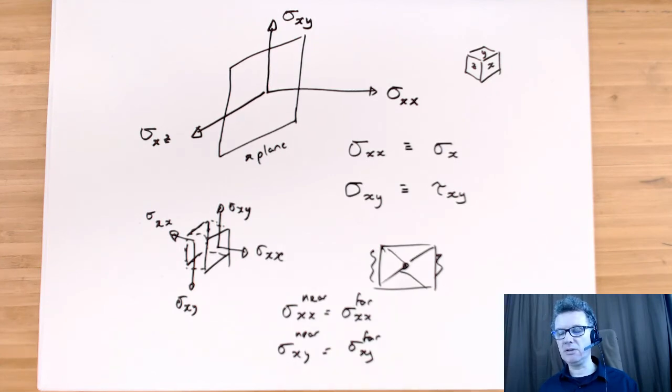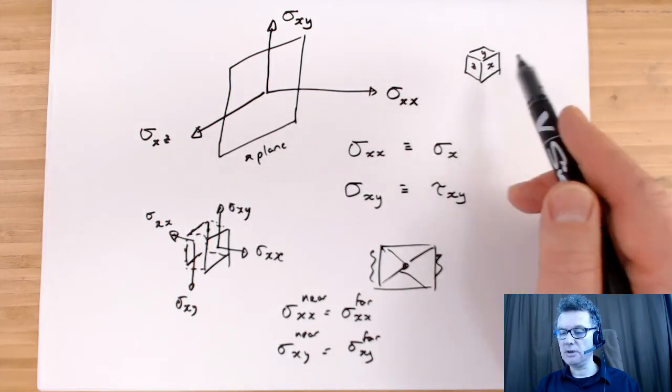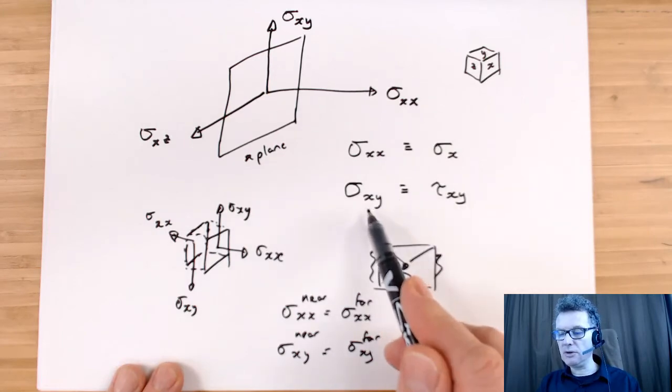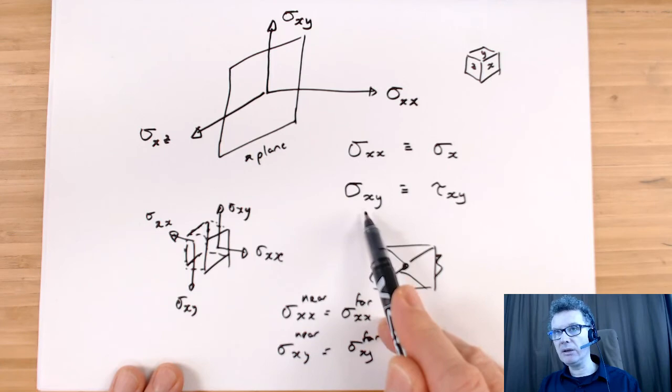So I don't need 18 terms. I only need 9. I only need the values I've got on the nearside. So my notation that I've used is that the first index is the plane and the second index is the direction.